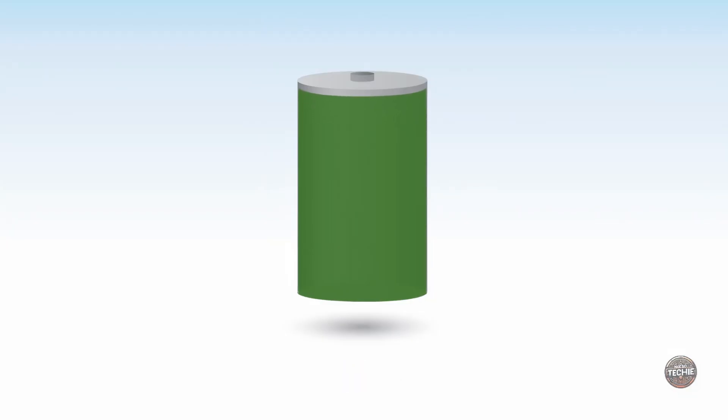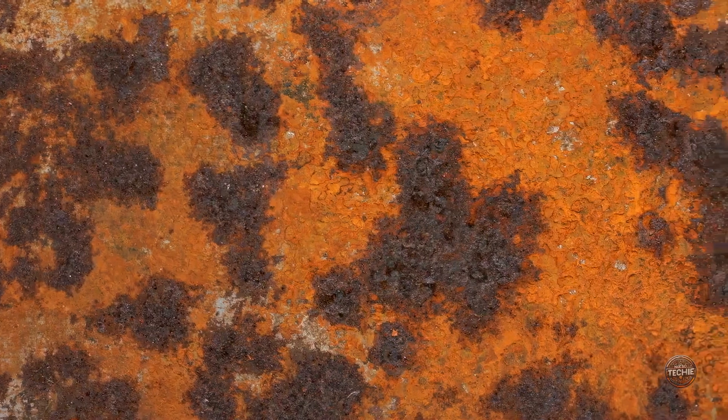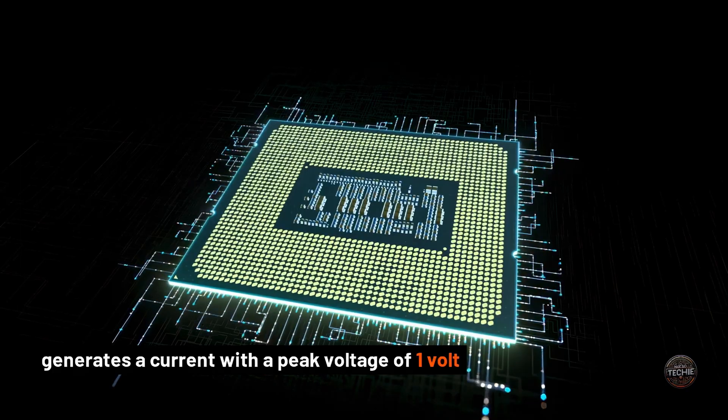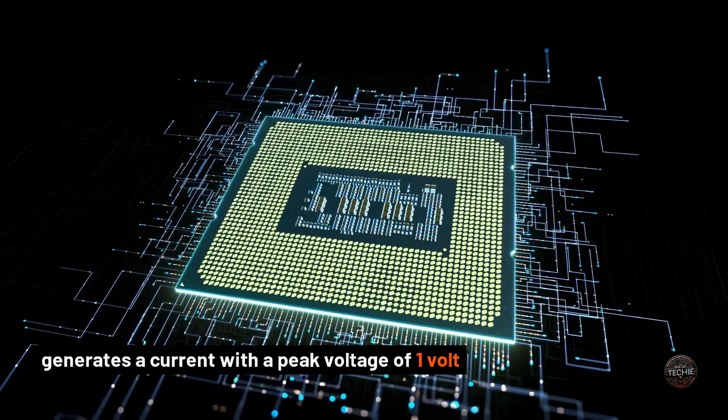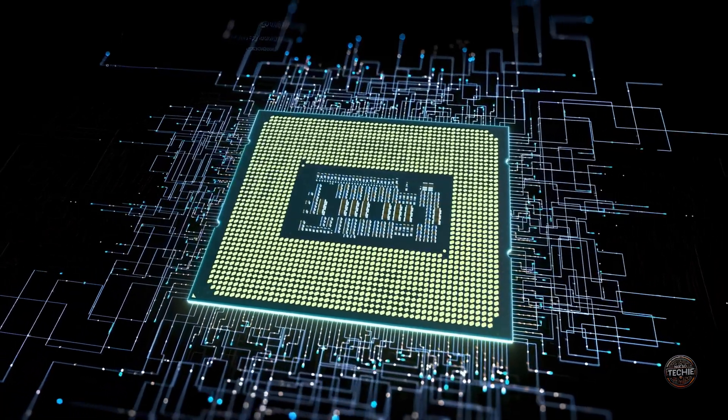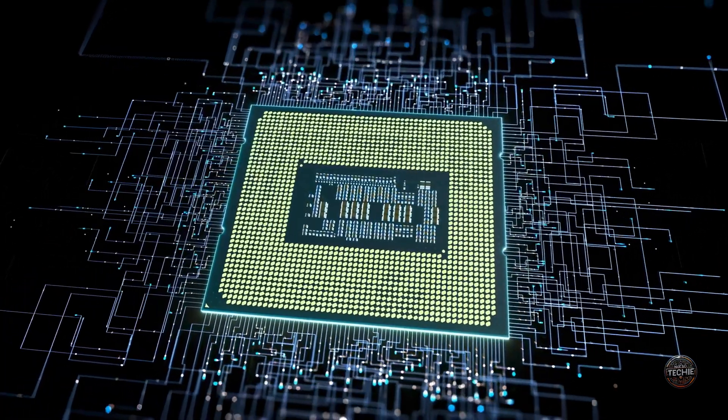These batteries generate energy by absorbing oxygen from the air and oxidizing zinc. This process generates a current with a peak voltage of 1 volt, enough to power tiny sensors, circuits, or even a small robotic arm.